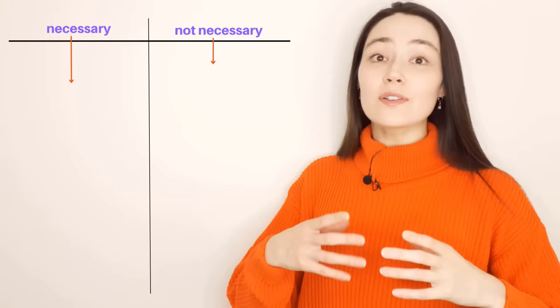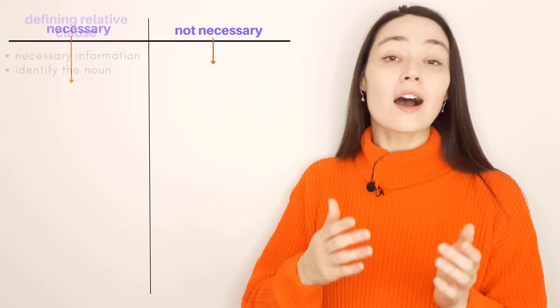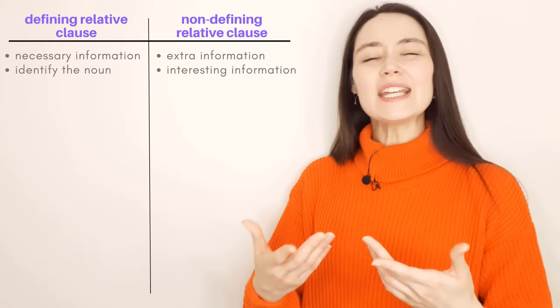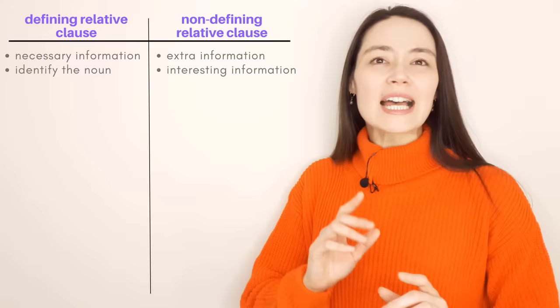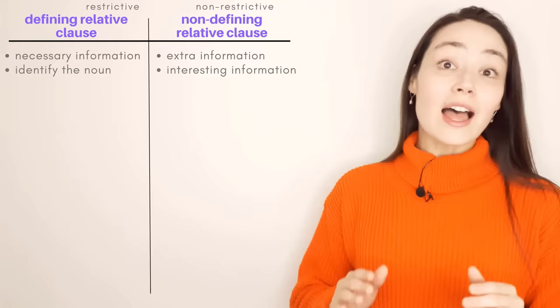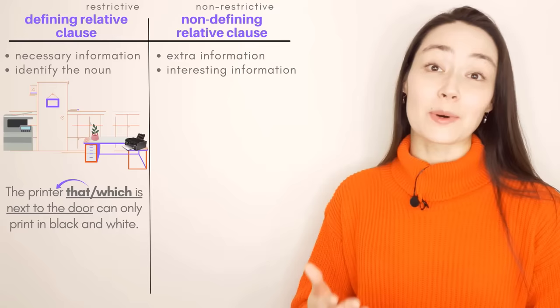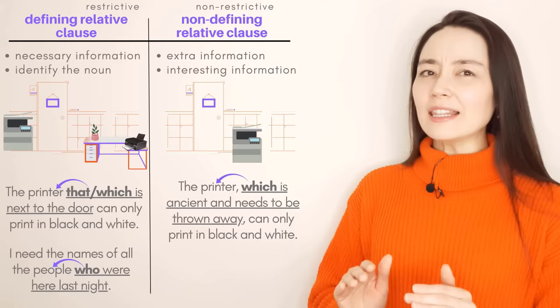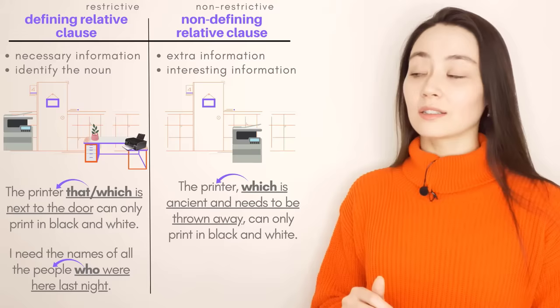Relative clauses that provide necessary information are called defining relative clauses — they help to identify the noun. Relative clauses that give extra or interesting information are called non-defining relative clauses. In your grammar books, these clauses might be called restrictive or non-restrictive — same thing. We normally need defining relative clauses because there is more than one thing. For example: The printer that or which is next to the door can only print in black and white. The printer, which is ancient and needs to be thrown away, can only print in black and white. I need the names of all the people who were here last night. I didn't speak to Ed, who was working in a different room.